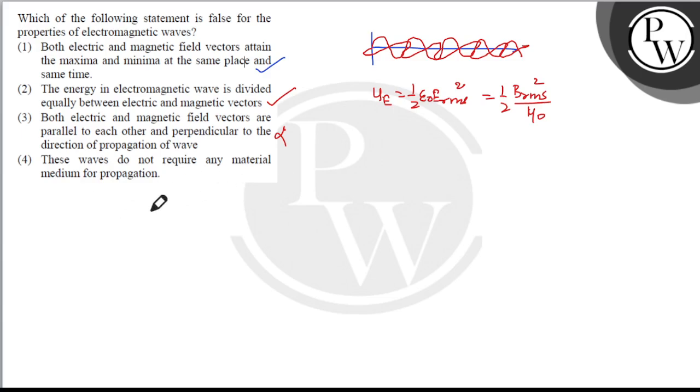These waves do not require any material medium for their propagation. This statement is completely correct. Electromagnetic waves can pass through vacuum.